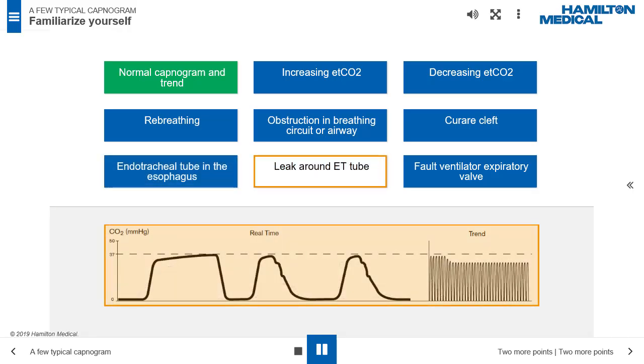Leak around ET tube. The downward slope of the plateau blends in with the descending limb. Possible causes include a leaky or deflated endotracheal or tracheostomy cuff, and an artificial airway that is too small for the patient.